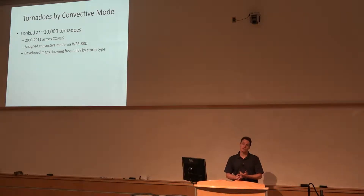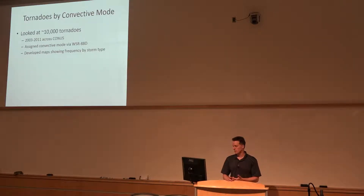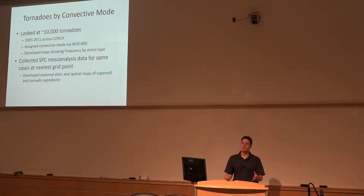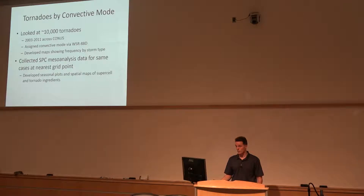We've got a big sample of convective mode cases where we looked at the entire CONUS — approximately 10,000 tornadoes over a multi-year period. We assigned convective mode looking at WSR-88D reflectivity and velocity data, typically using level two, and then we developed a whole bunch of spatial plots using kernel density estimates to come up with the frequency of occurrence of tornadic storms, various types of supercells, and various intensities of tornadoes. We've also got the SPC mesoanalysis data which we can grab for the nearest grid point, so we can piece this together and see what it looks like spatially.